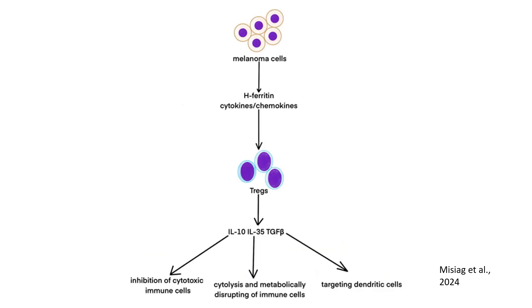This diagram illustrates the mechanisms by which melanoma cells exploit regulatory T cells to suppress the immune system. By manipulating immune signaling pathways, melanoma creates an environment that promotes tumor survival and evasion of immune responses. Melanoma cells release key factors, including H-ferritin, cytokines and chemokines, which recruit and activate Tregs.